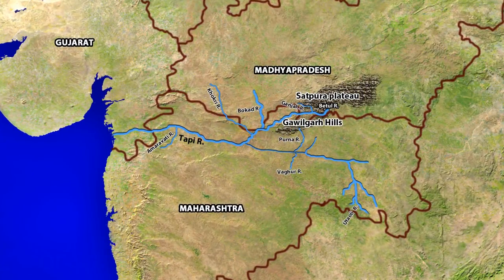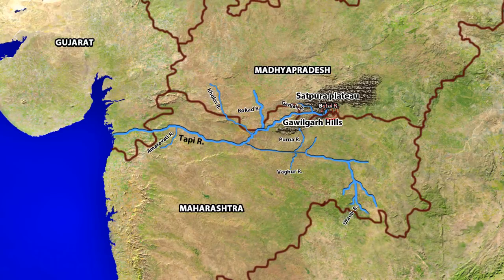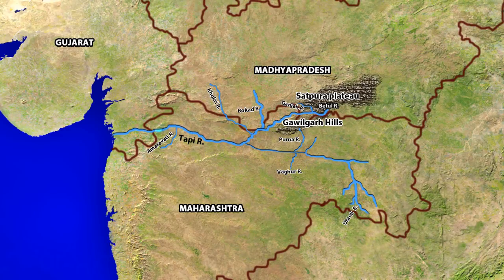The Tapi originates in the sacred tank of Multai on the Satpura Plateau in Betul district of Madhya Pradesh. Its main tributaries on the left bank are Kursi, Kapra, Khokri, Utauli, Vaghur and Amravati, and on the right bank are Puna, Betul, Patki, Ganjal, Dhatiranj and Bokar. It then flows westwards through Madhya Pradesh, Maharashtra and Southern Gujarat, and finally drains into the Arabian Sea.